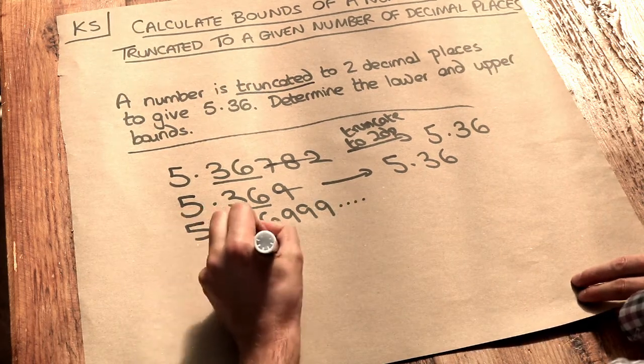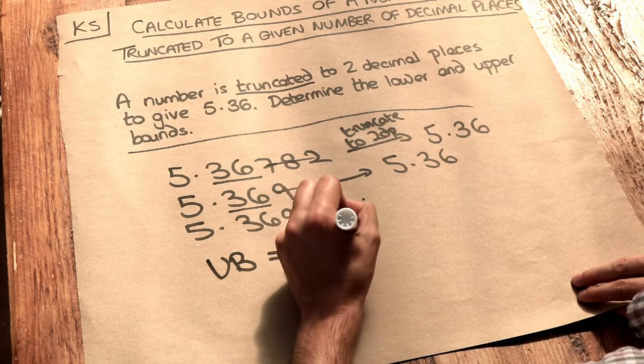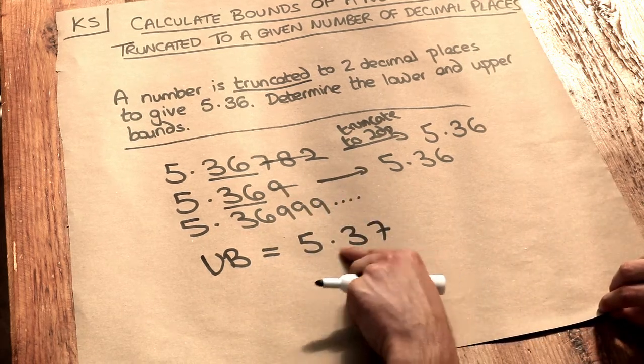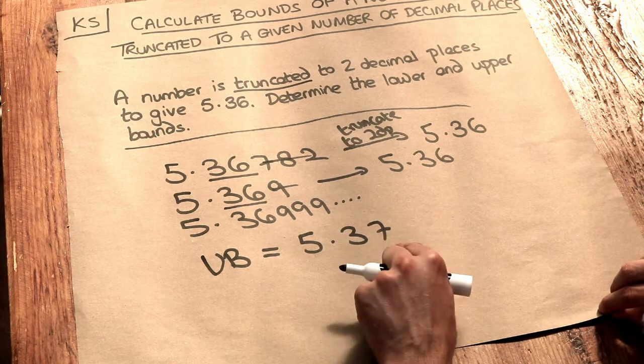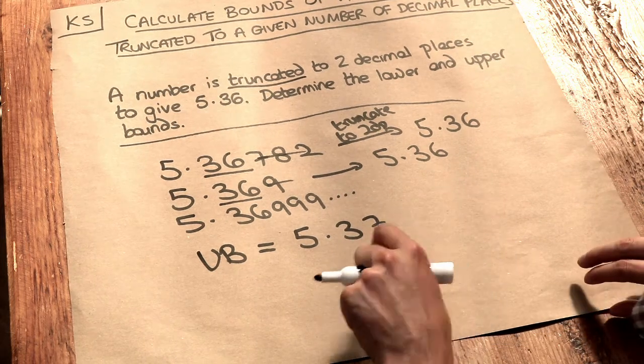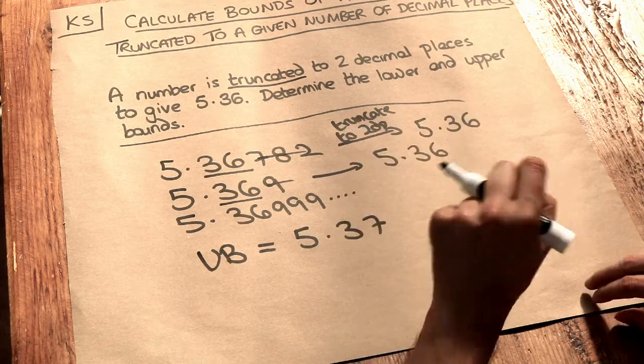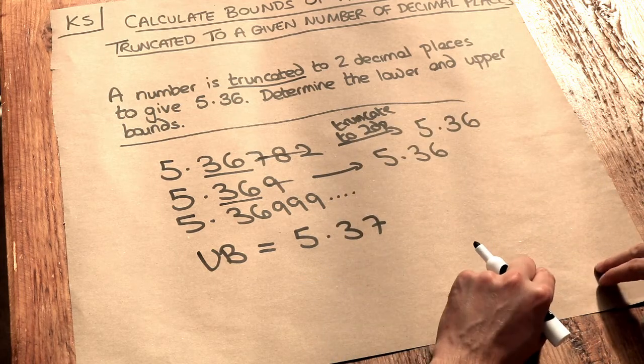So the upper bound is going to be 5.37. Now, even though 5.37 truncated to decimal places is 5.37, we actually, with the upper bound, think of the number just a smidge below it. So infinitesimally close to 5.37, but just below it.